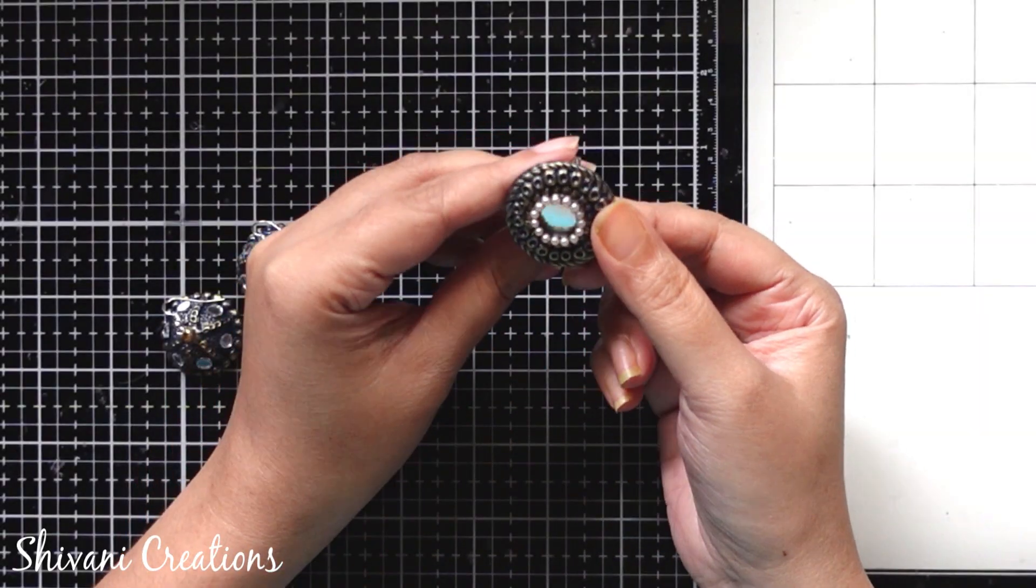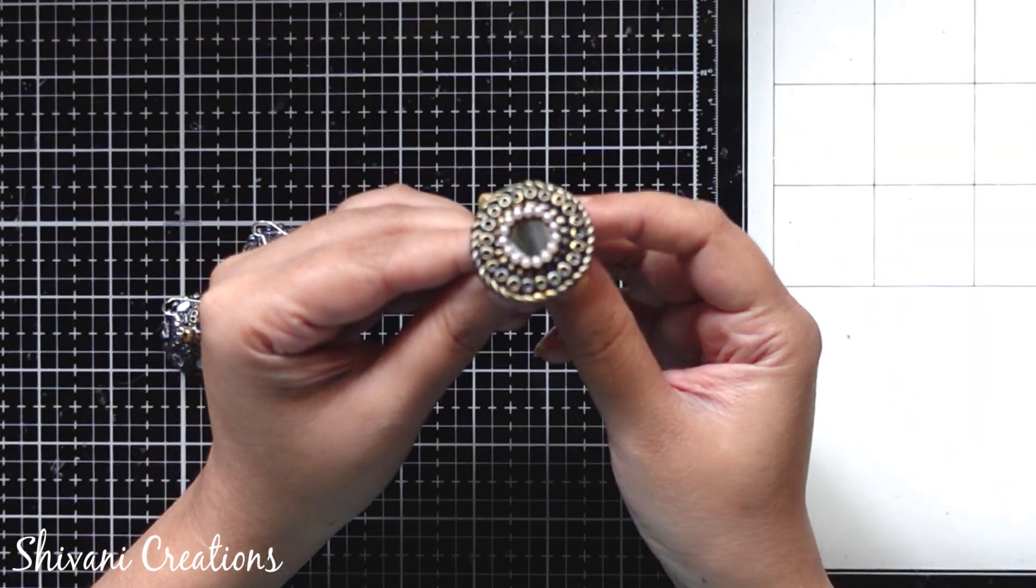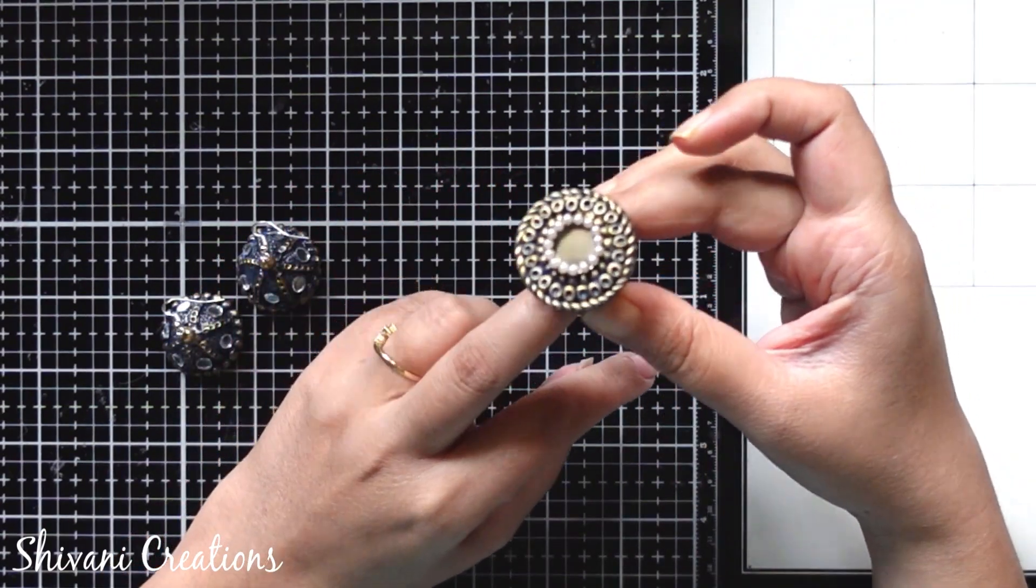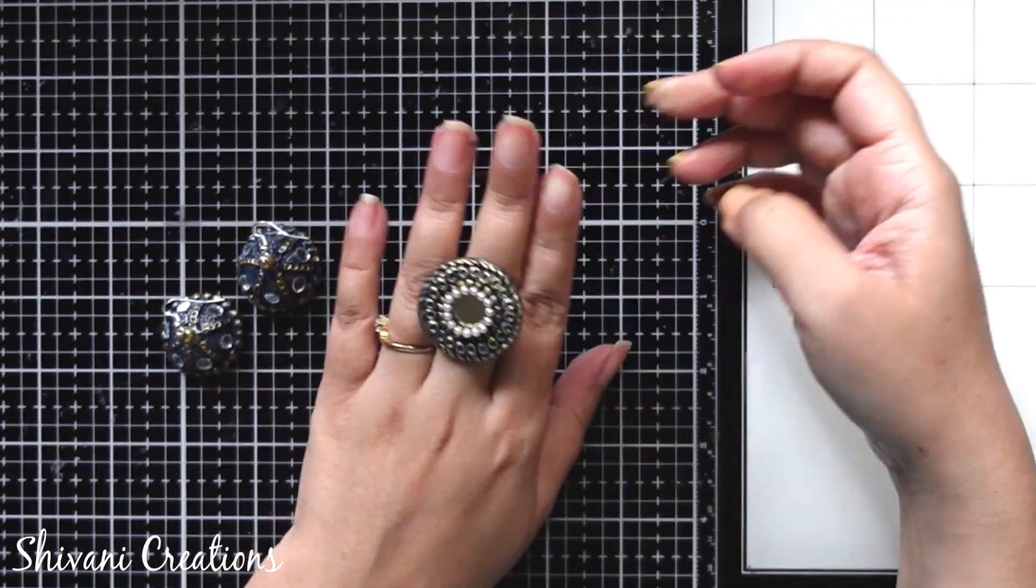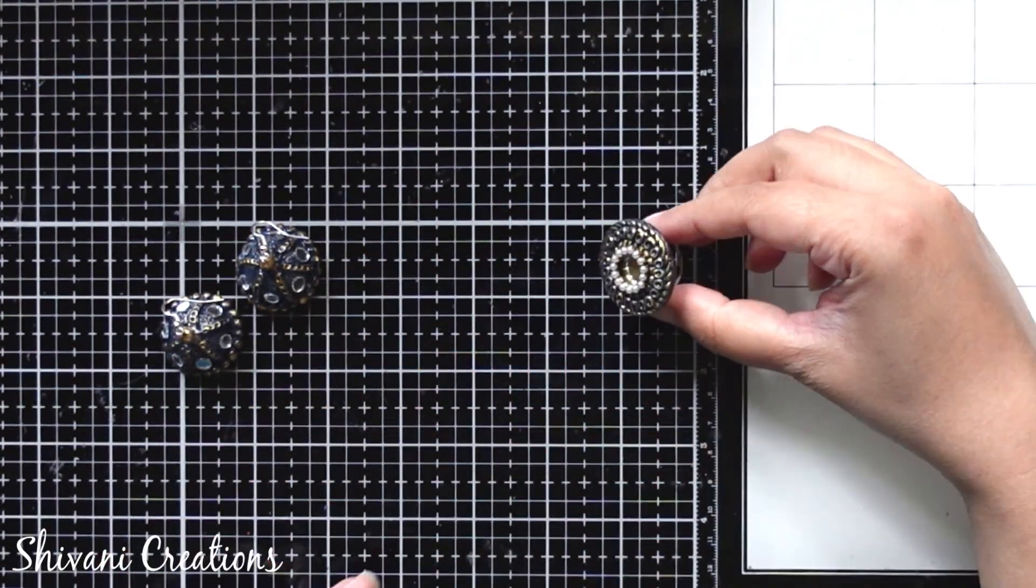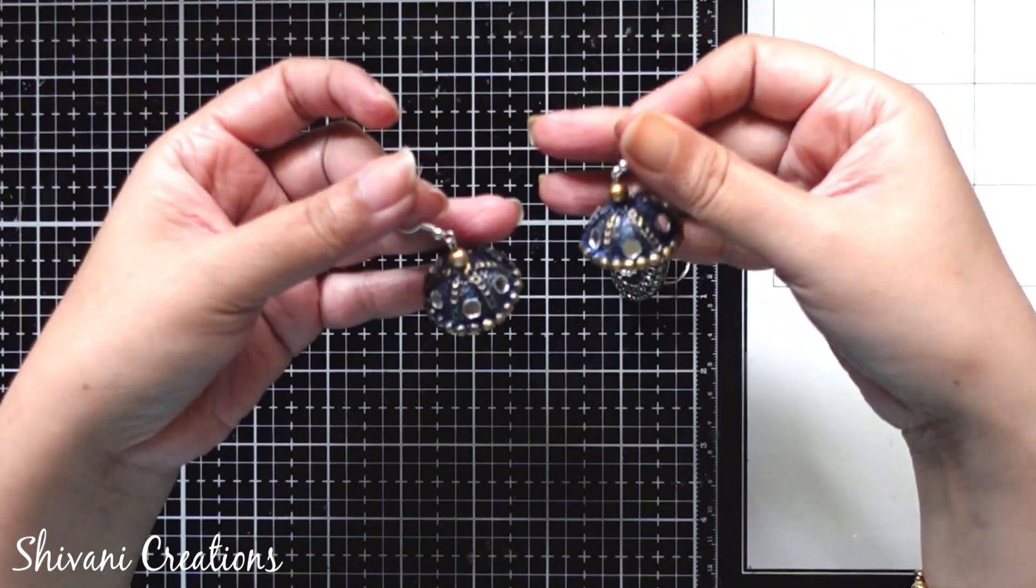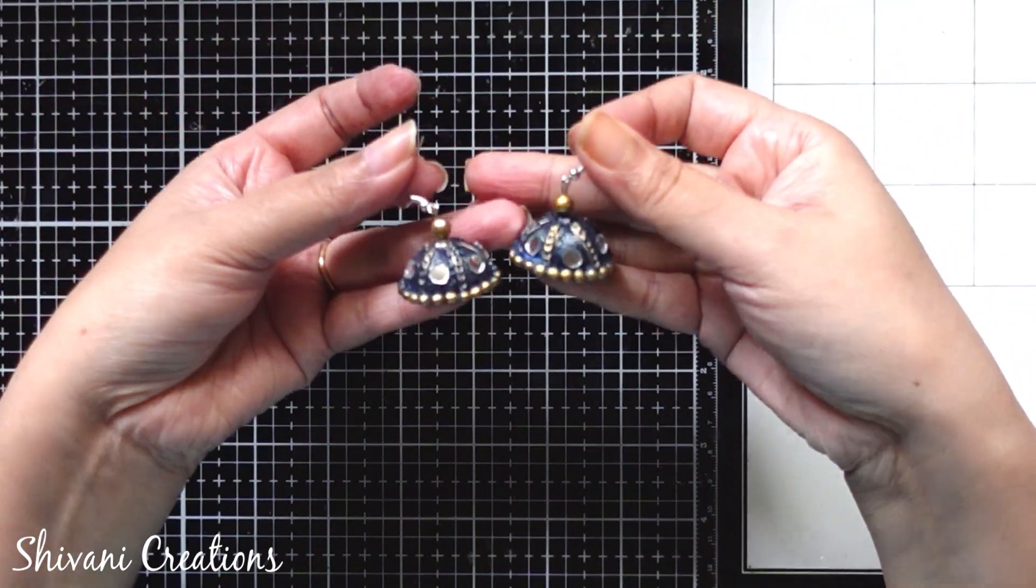In the center of the ring I have added this gold pearl chain and the finger ring is ready to wear. It's looking absolutely stunning for the festive season and along with that you can wear these beautiful jumkas. Isn't it looking very pretty? You can make it in any color combination.